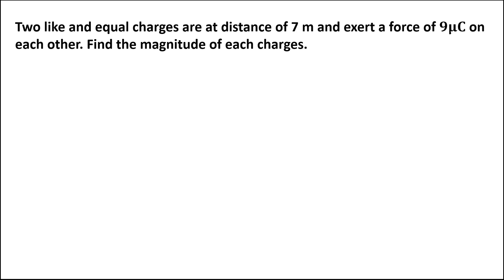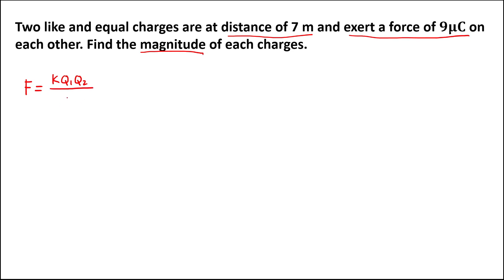Let's have this problem. Two like, unequal charges are at a distance of 7 meters and exert a force of 9 micronewtons on each other. We need to find the magnitude of each charge. From Coulomb's law, the electric force is equal to the Coulomb's constant times the two charges, q₁ and q₂, all over the distance squared.